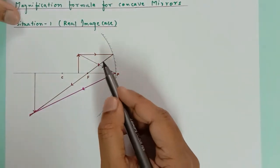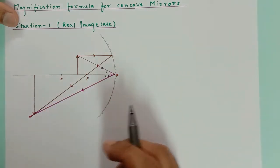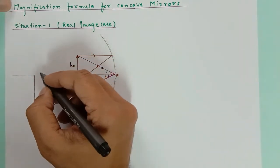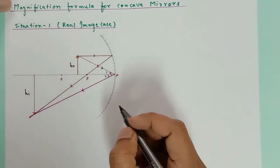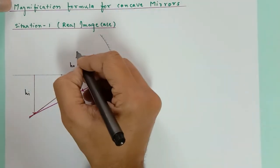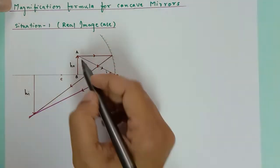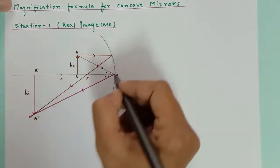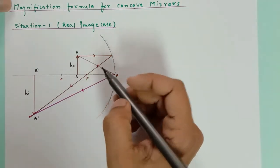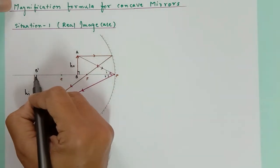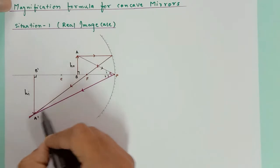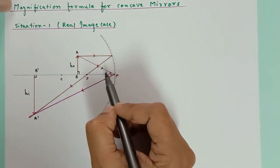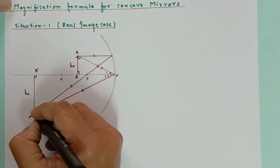Since both the reflected rays are meeting, there is a real image formation. This is the object and the height of the object is ho. The image is real and inverted; say its height is hi. Now I am going to consider triangle APB and triangle A'B'P. These two triangles are similar because these two angles are 90 degrees, and the angle of incidence and reflection are the same as per the laws of reflection.